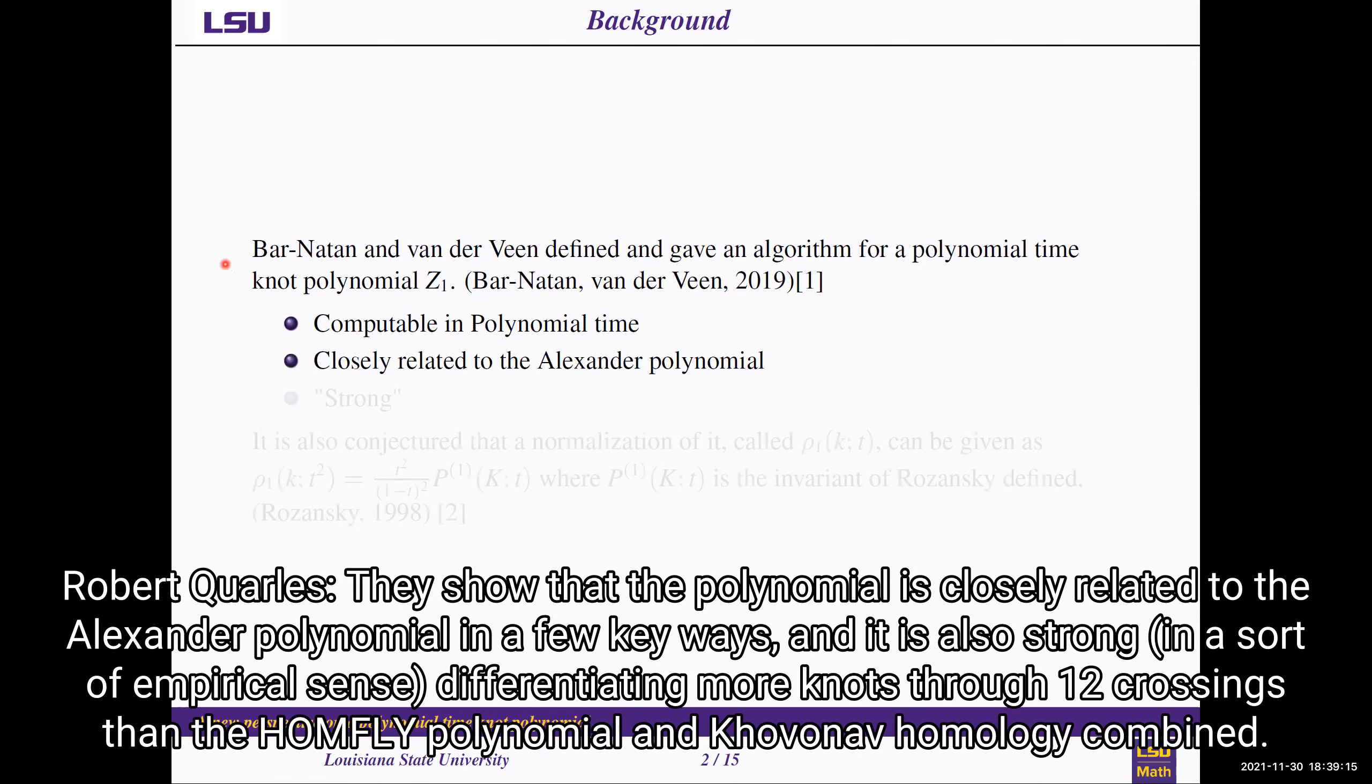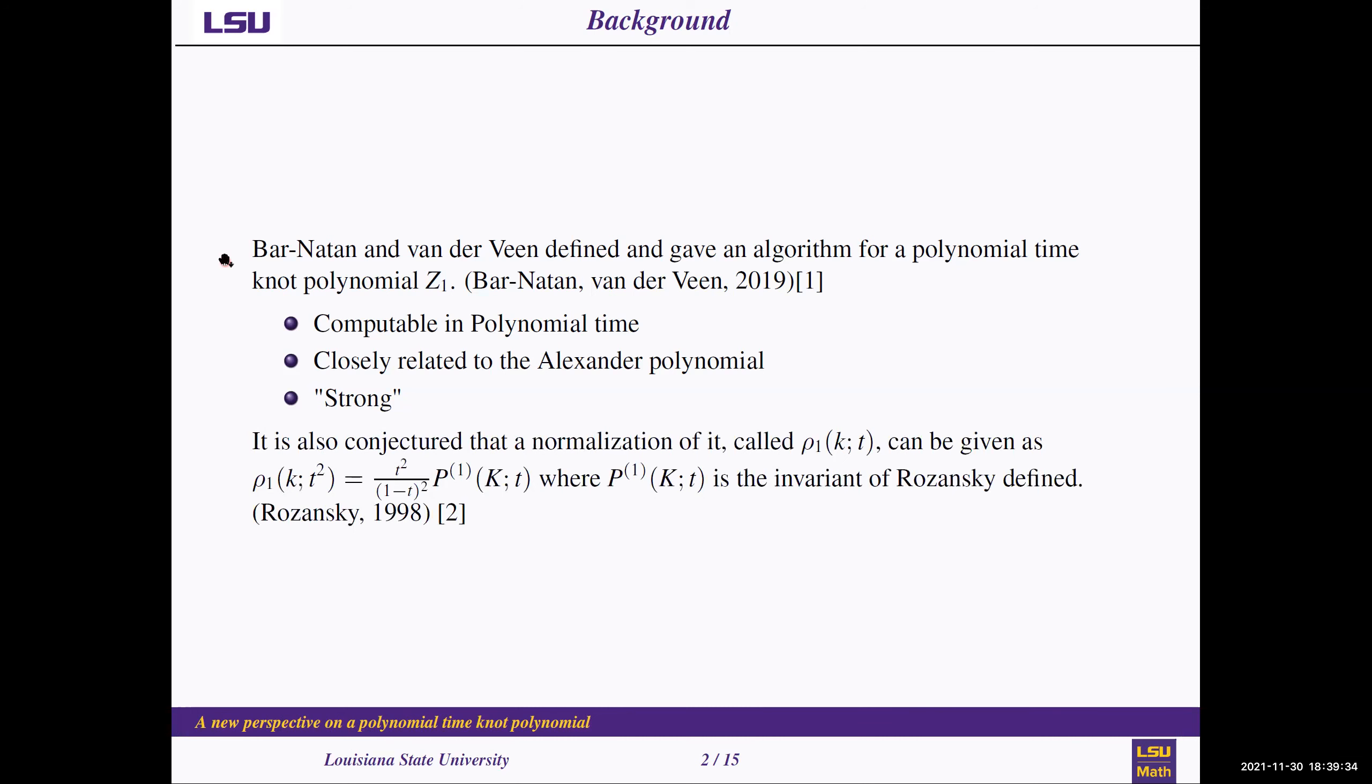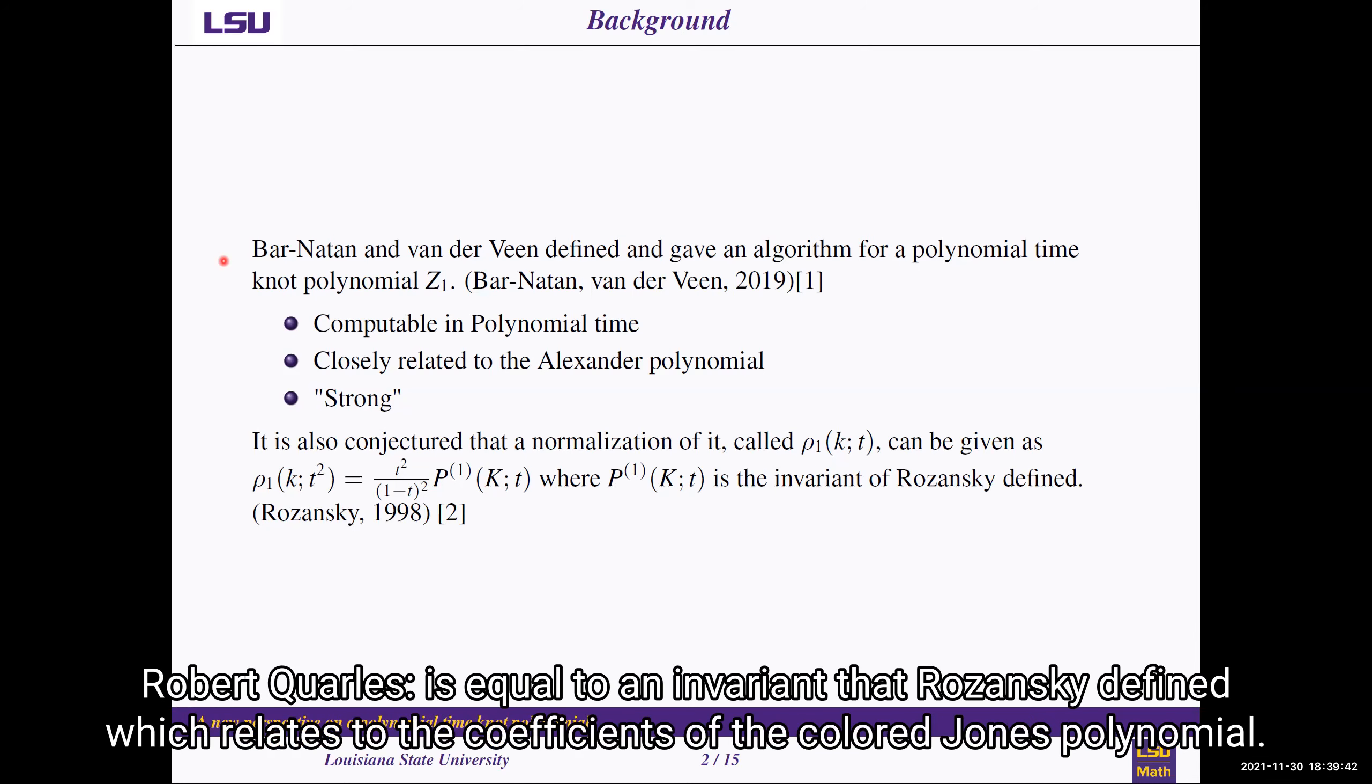They show that the polynomial is closely related to the Alexander polynomial in a few key ways, and it is also strong in an empirical sense, differentiating more knots through 12 crossings than the Homfly polynomial and Khovanov homology combined. It is also conjectured that a normalization of it is equal to an invariant that Rozansky defined, which relates to the coefficients of the colored Jones polynomial.